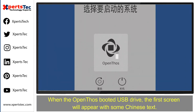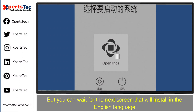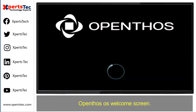When the OpenThos bootable USB drive boots, the first screen will appear with some Chinese text. But you can wait for the next screen, which will install the English language.